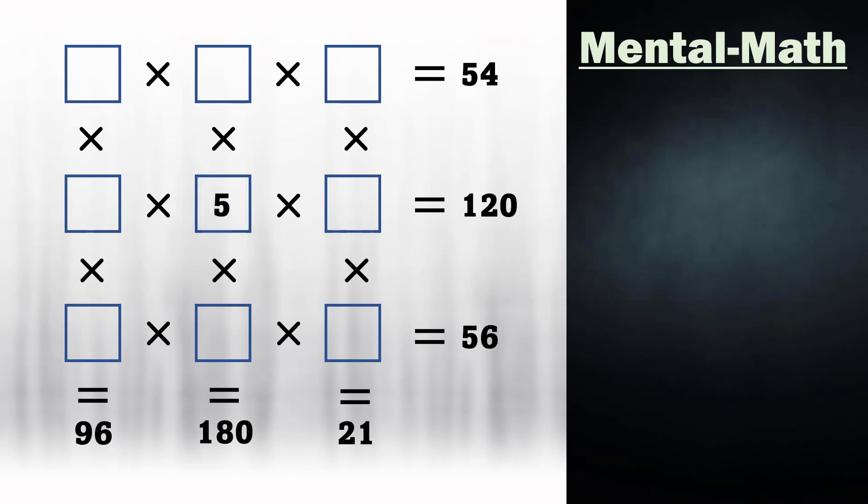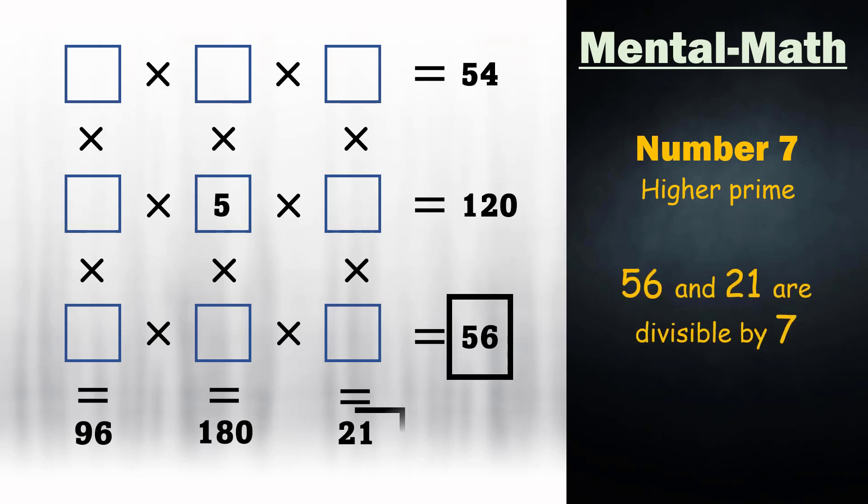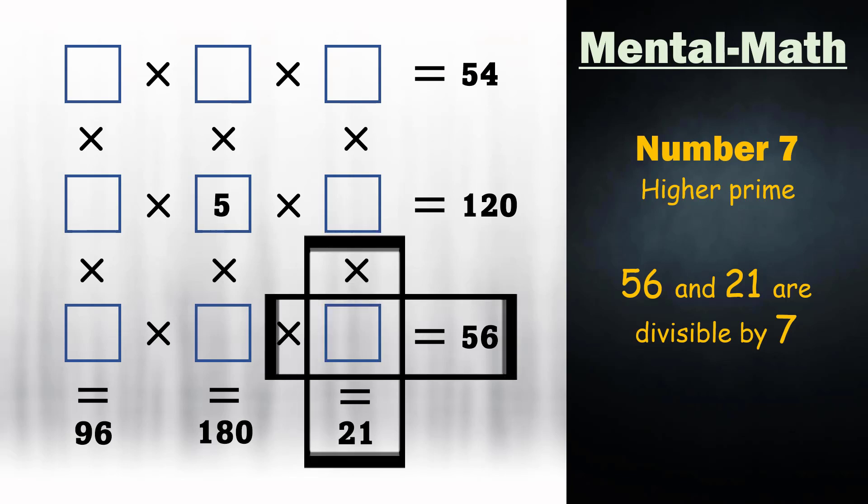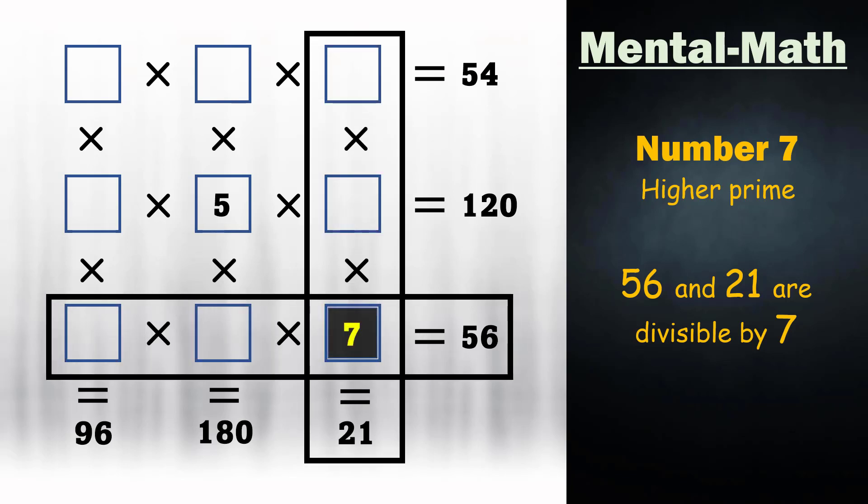The next easier number to target is 7 because it's a higher prime number. So it's quite possible that only a few of the products would be divisible by it. Out of these products, the numbers divisible by 7 are 56 and 21. So 7 must be present here.